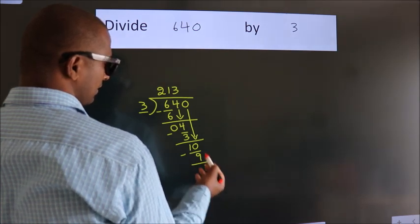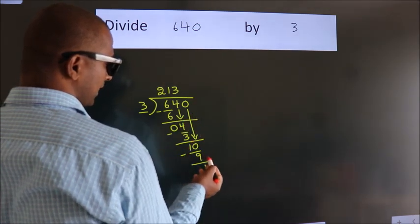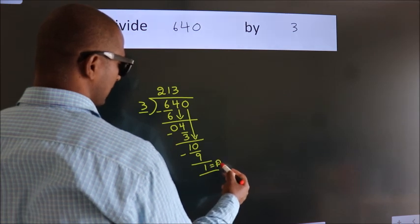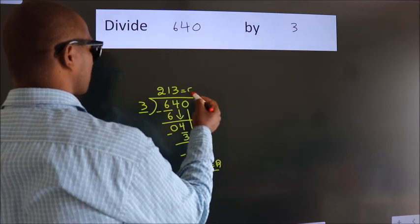After this, no more numbers to bring it down. So, we stop here. This is our remainder. This is our quotient.